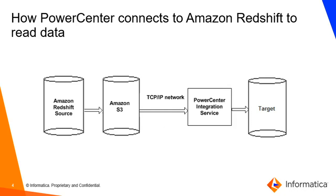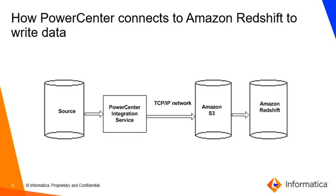The PowerCenter integration service stores the data in a staging location on your server machine. Amazon S3 is a storage service in which you can copy the data from source and simultaneously move data to any target. The PowerCenter integration service uses a copy command that copies the data from Amazon S3 to the target.